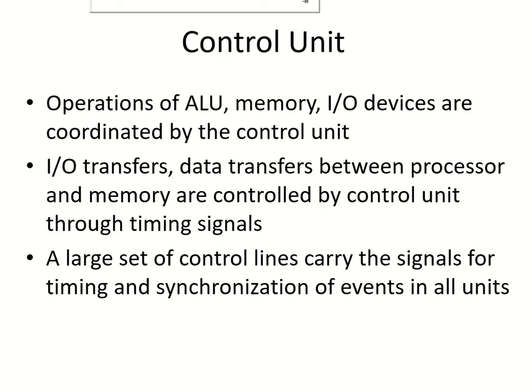What does the control unit do? All the operations of the ALU, the memory, and the input/output devices are coordinated by the control unit. I/O transfers and data transfers between the processor and memory are controlled by the control unit through timing signals. A large set of control lines carry the signals for timing and synchronization of events in all units.